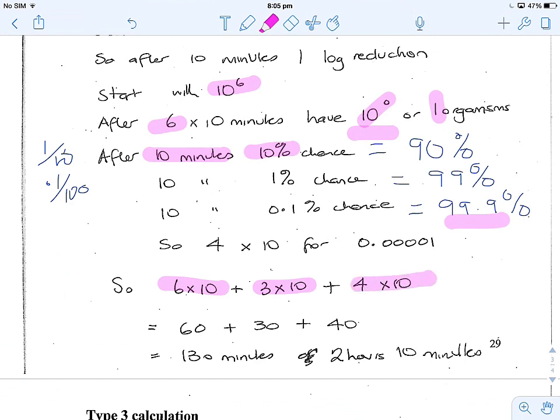So therefore add them up, 60 minutes, 30 minutes and 40 minutes. That gives you a total of 130 minutes to make sure that you are 99.999999% sure your organisms are dead.